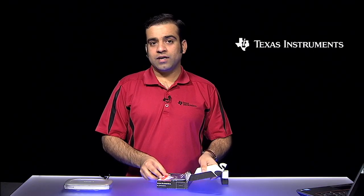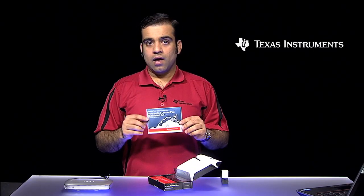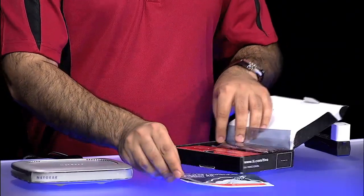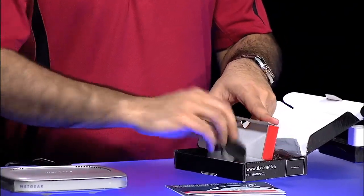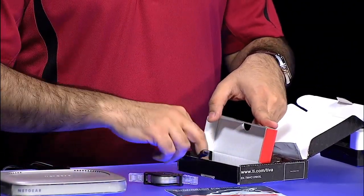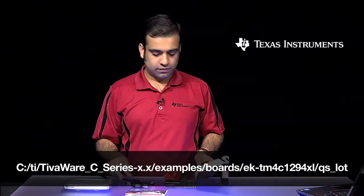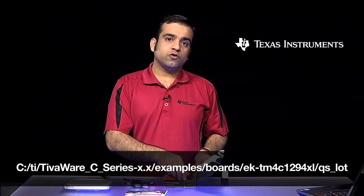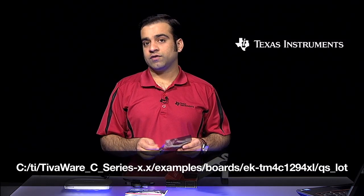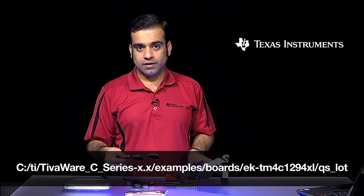The connected launchpad comes with a quick start guide, a retractable Ethernet cable, and a micro USB cable, which we will use to get started with the Internet of Things application. The source code for this application can be found in the TivaWare for C-Series at the location shown on the screen.